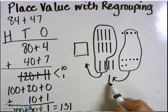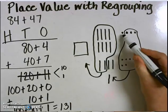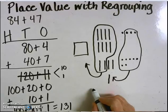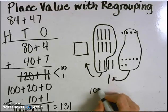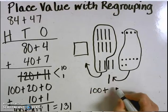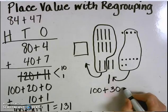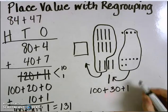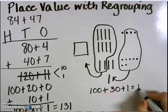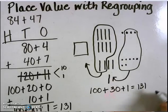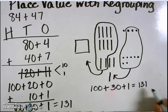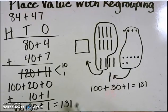I now have 100. I have three 10s or 30 and one one. 100 plus 30 plus one equals 131.